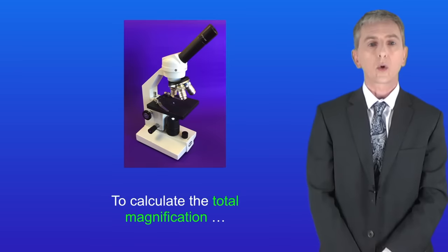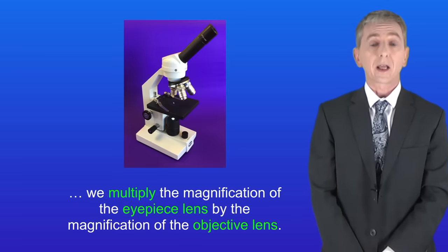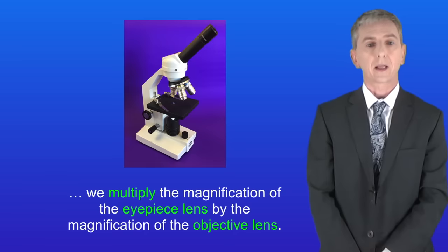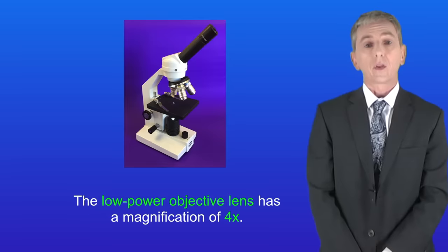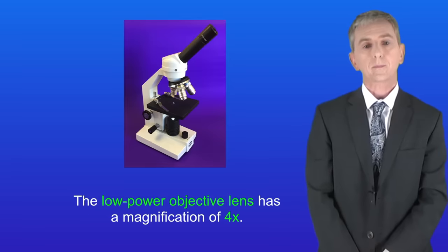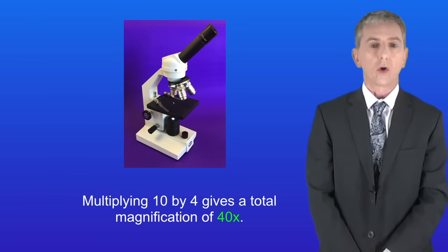To calculate the total magnification we multiply the magnification of the eyepiece lens by the magnification of the objective lens. The eyepiece lens has a magnification of 10 times and the low power objective lens has a magnification of 4 times. Multiplying 10 by 4 gives a total magnification of 40 times.